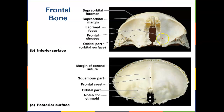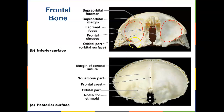Looking at the frontal bone in cross-section: here is the supraorbital foramen, supraorbital margin, and lacrimal fossa. Here are the frontal sinuses — they are adjacent to the eyeballs. The orbital surface and orbital part are visible. Here's the margin of the coronal suture. The squamous portion is just the bone itself. The frontal crest separates the right and left cerebrums. The ethmoid notch is where the ethmoid bone attaches to the frontal bone.